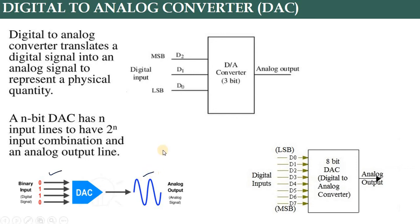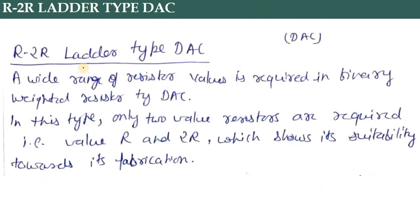In the weighted resistor DAC, if there are 4 bits of input, the output will have 8 bits. We discussed MSB and LSB and how to see the analog output. If there are 3 bits, we can see 2 raised to the power 3 different types of inputs and outputs from one digital to analog converter.